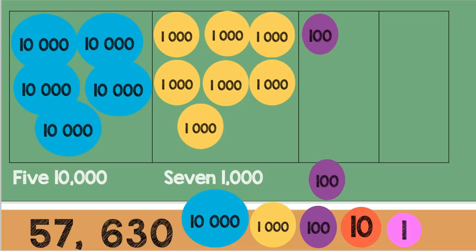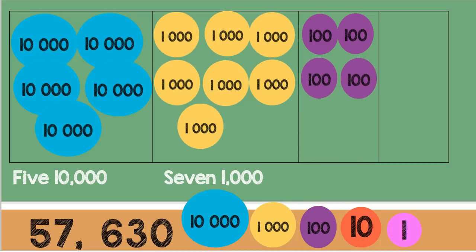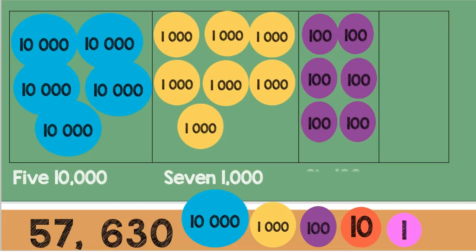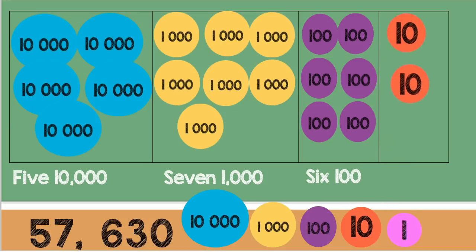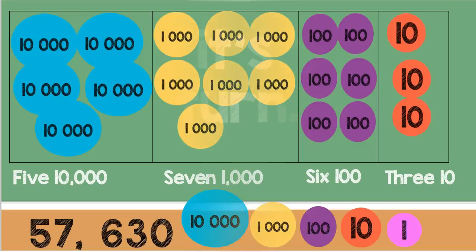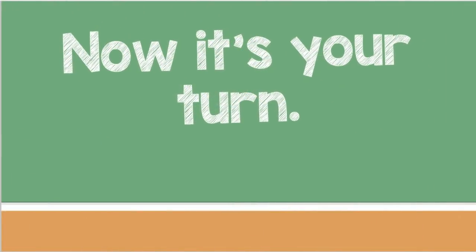Then we have 1, 2, 3, 4, 5, 6 hundreds to make 600. Last, 1, 2, 3 tens to make 30. And it's a sum of 57,630.